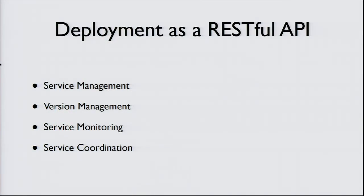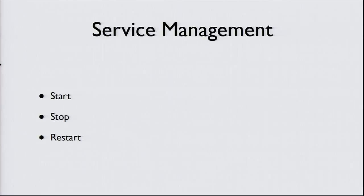CAST is really a deployment system as a RESTful API, and we've broken it up into four big areas. The first is service management. It sounds silly, but it's like init over HTTP — start, stop, and restarting services. People have done this before, but we think it's critical to start exposing this in an HTTP API. Because once you have an API for these things, people start building cool things on top of them.